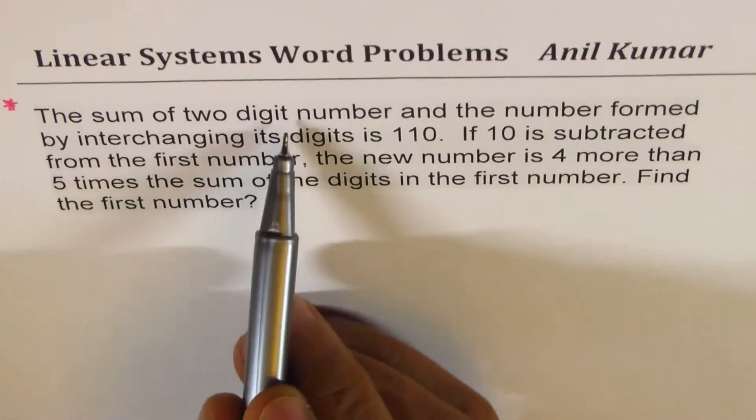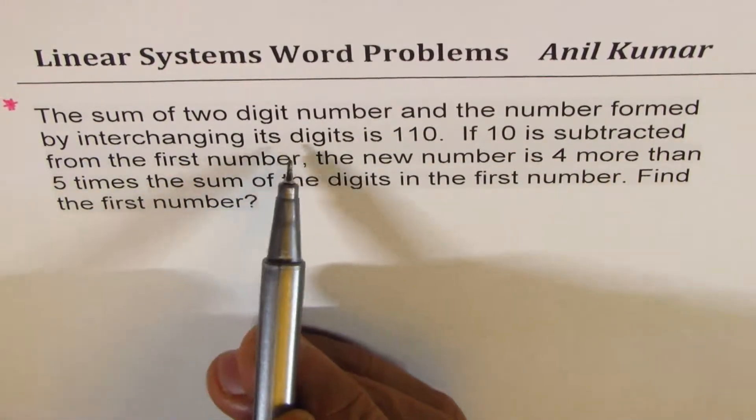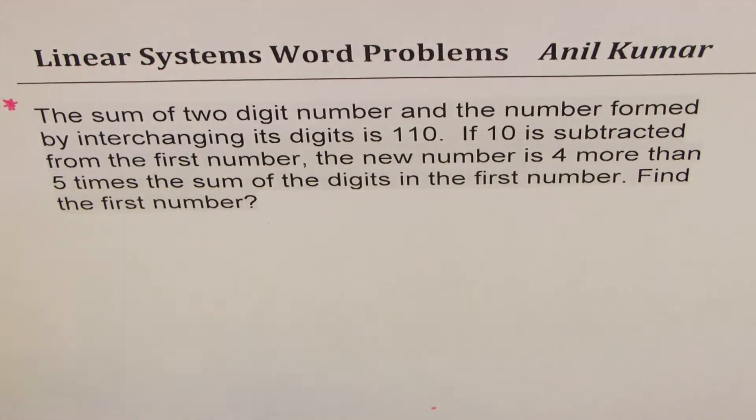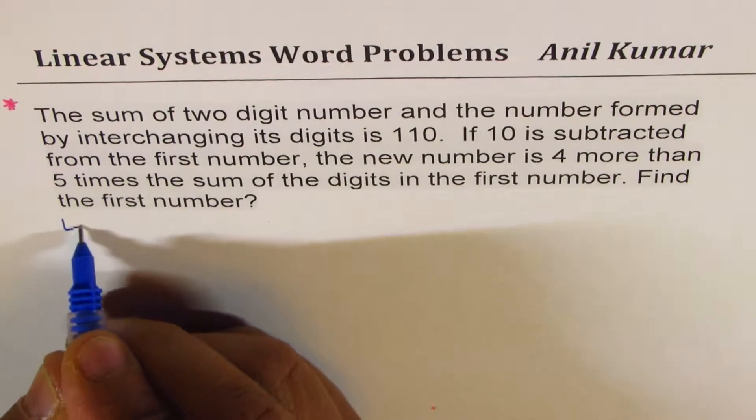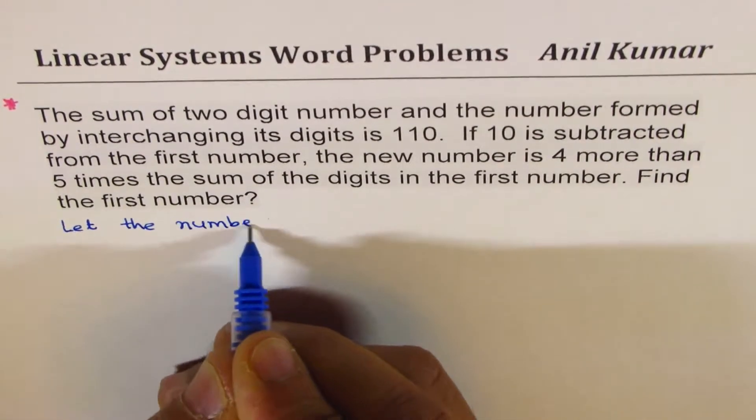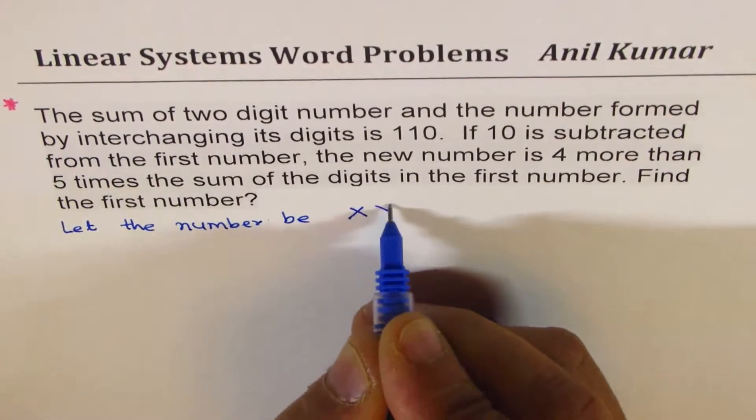We are saying sum of two digit number and the number formed by interchanging its digit is 110. So let's start with the let statement. Let's say let the number be x, y.